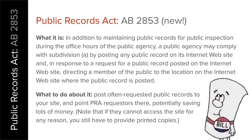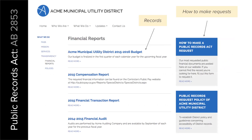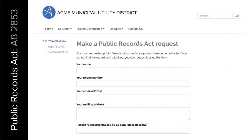AB2853 is completely optional, but one of the bonuses of having a website now is that if you post things people ask for during PRA requests, you can point to the website instead of making photocopies, mailing them, or having people come to the front counter. You could say, 'All of that stuff is posted right here on our website — here's a link.' That could save you time and money. Put the records up that people might be asking for, make it clear how they can make requests, and put a form right on your website.